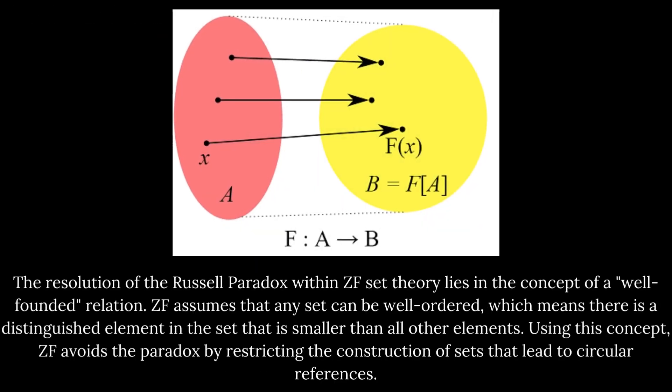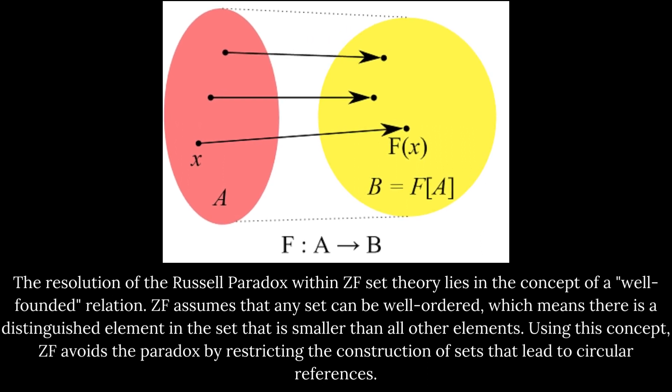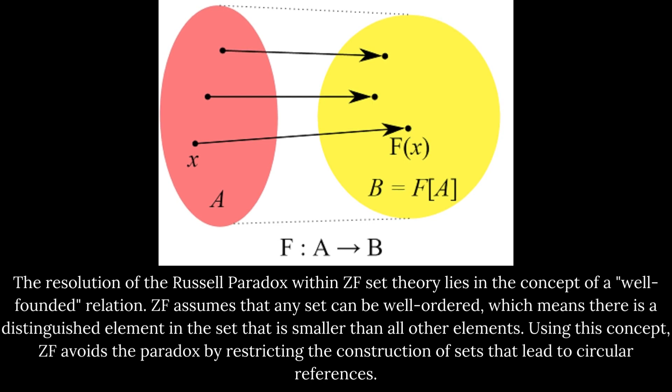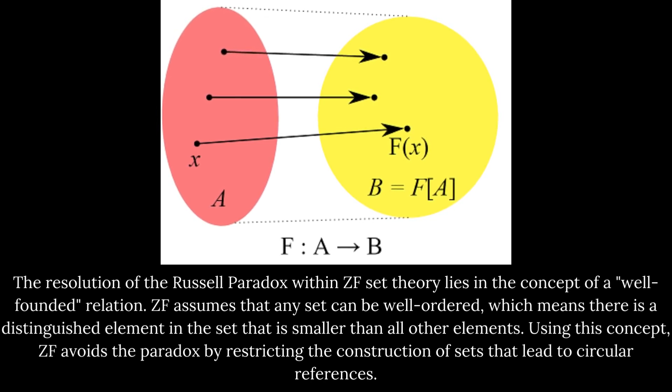The resolution of the Russell paradox within ZF set theory lies in the concept of a well-founded relation. ZF assumes that any set can be well-ordered, which means there is a distinguished element in the set that is smaller than all other elements. Using this concept, ZF avoids the paradox by restricting the construction of sets that lead to circular references.